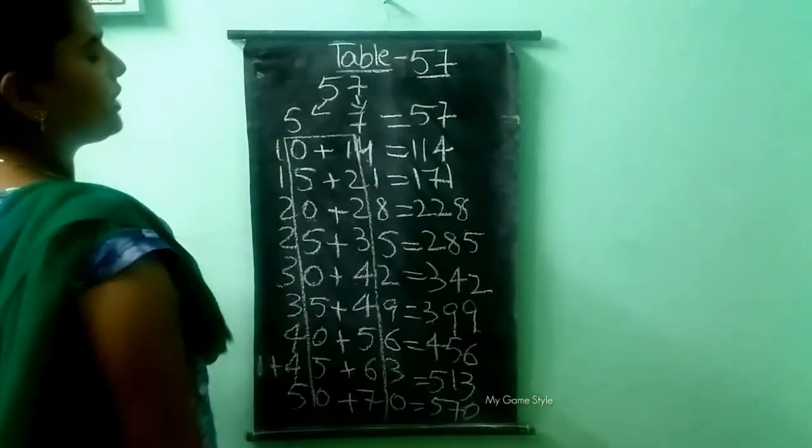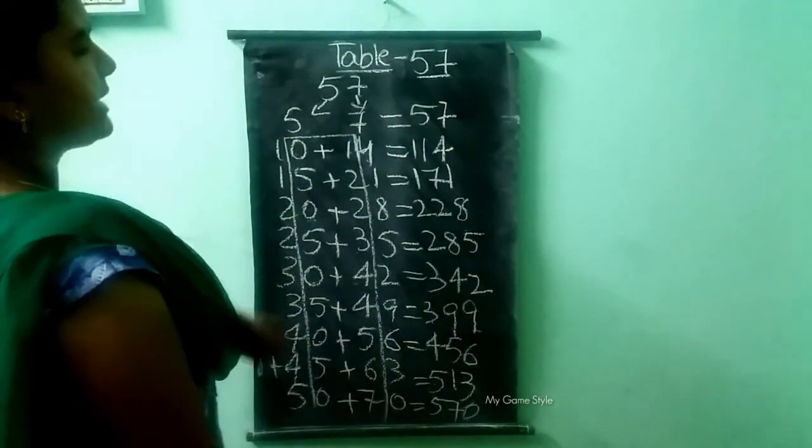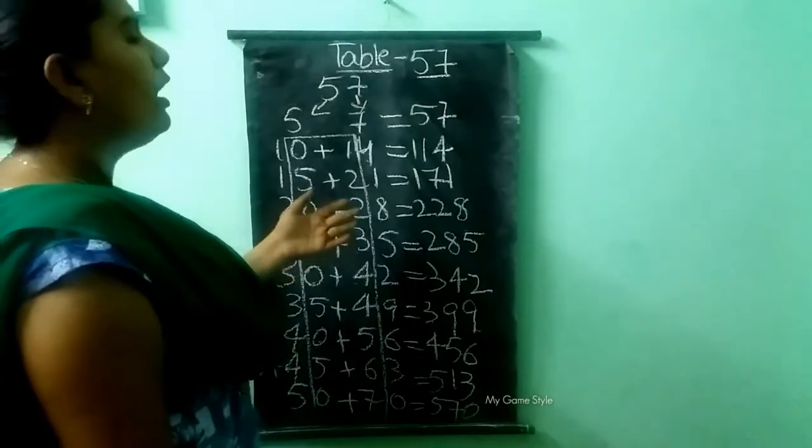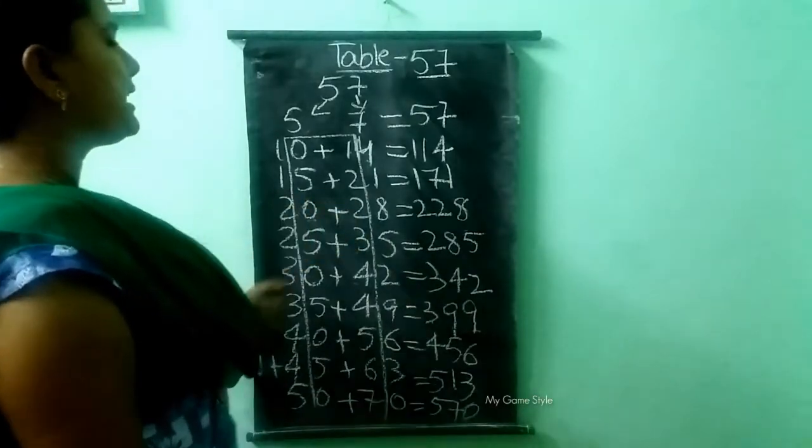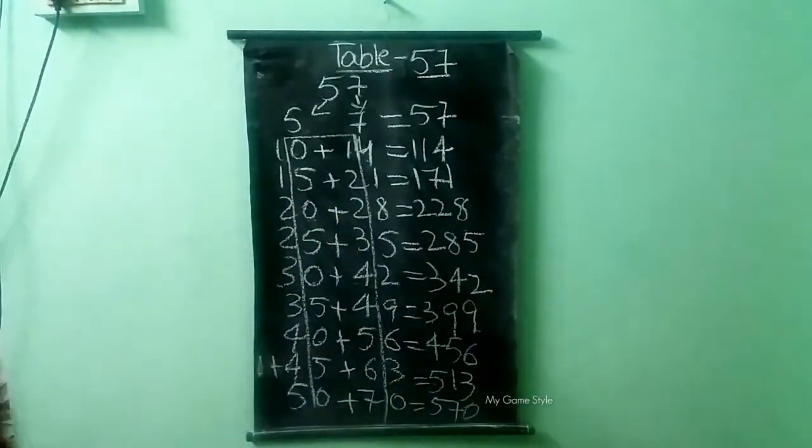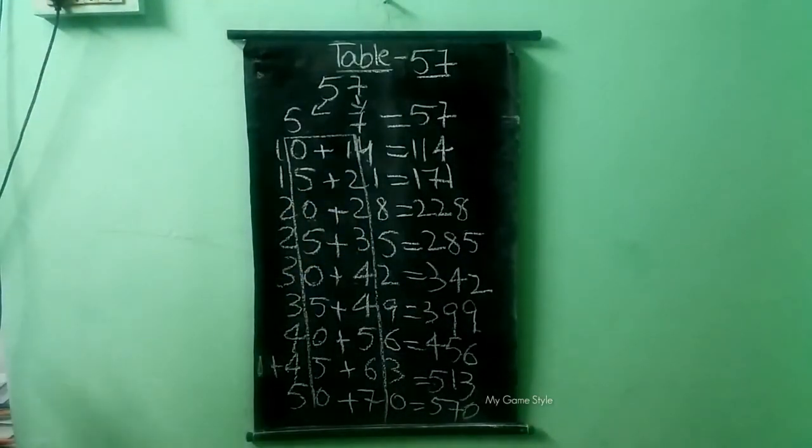This is the 57 table. This is how we need to learn it in an easy way. Thank you for watching this video.